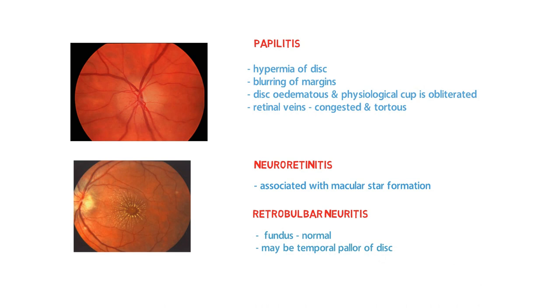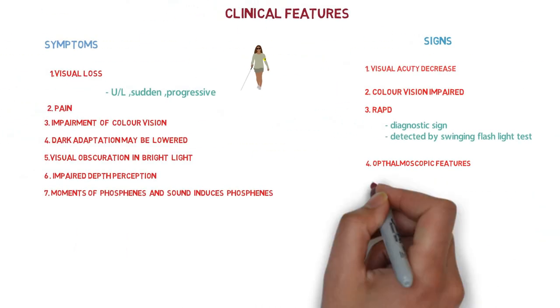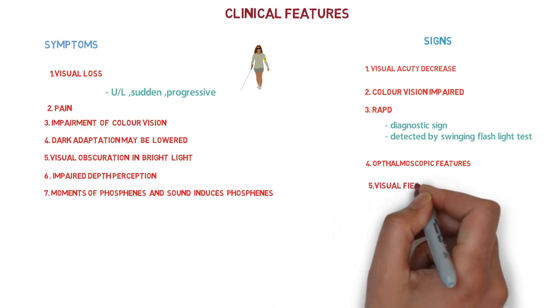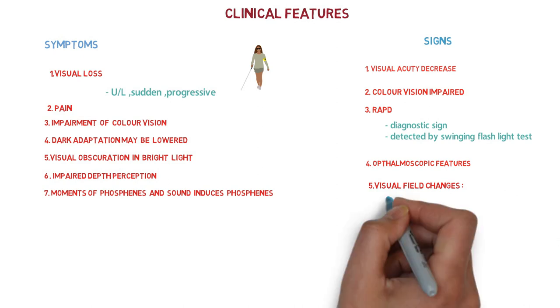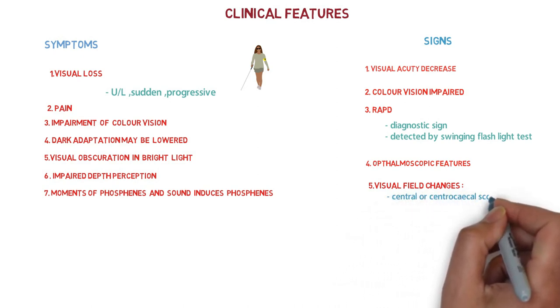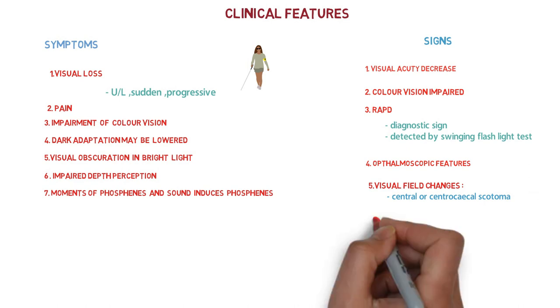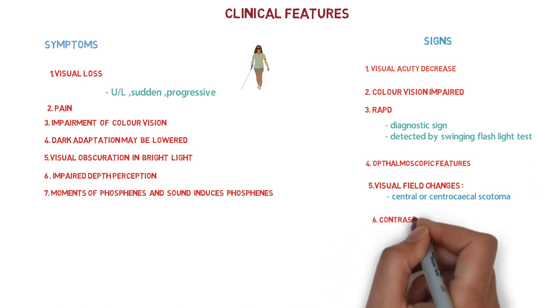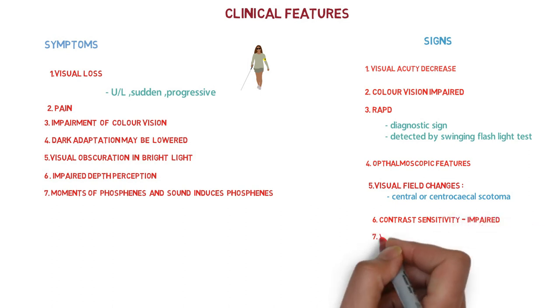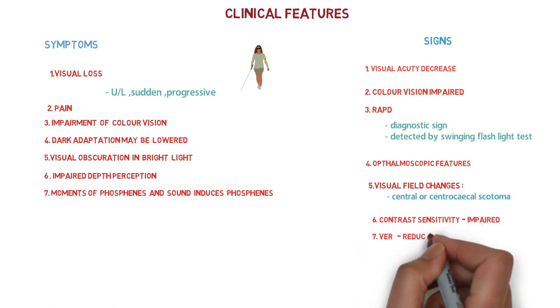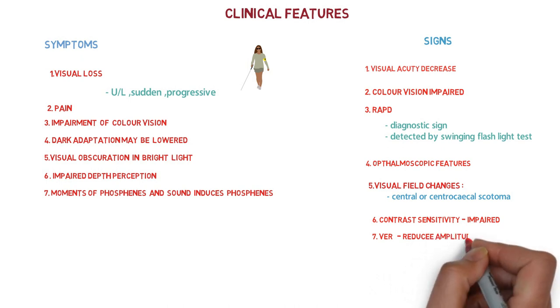These are the ophthalmic features in optic neuritis. Now the visual field changes - there may be central or centrocecal scotoma. The contrast sensitivity is impaired. And the last one is visually evoked response (VER). Visually evoked response in optic neuritis is reduced in amplitude and delayed in transmission time.